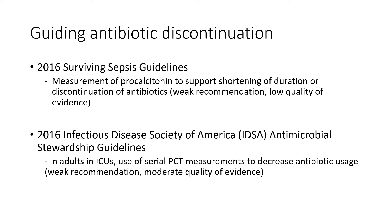In guiding antibiotic discontinuation, procalcitonin has been mentioned in several guidelines for sepsis and long-standing infection. The 2016 Surviving Sepsis guidelines state that measurement of procalcitonin can be used to support shortening of duration and discontinuation of antibiotics, though this is a weak recommendation with low quality of evidence. The 2016 IDSA antimicrobial stewardship guidelines suggest that in adults in ICUs, serial procalcitonin measurements can be used to decrease antibiotic usage — again a weak recommendation. In critically ill patients, antibiotic initiation should not be based on PCT measurements, as empiric therapy should not be delayed.